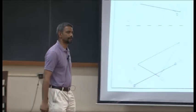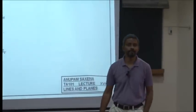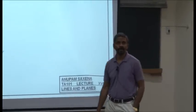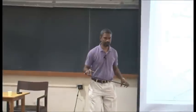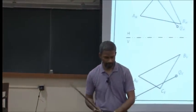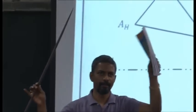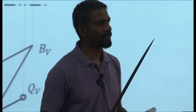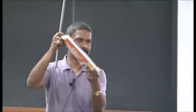How do you figure if a plane will intersect with the line or vice versa? The best way to figure that is to see the entire scenario in the edge view of the plane. Take this plane, look at the edge view of the plane, and see if the plane is intersecting with the line.